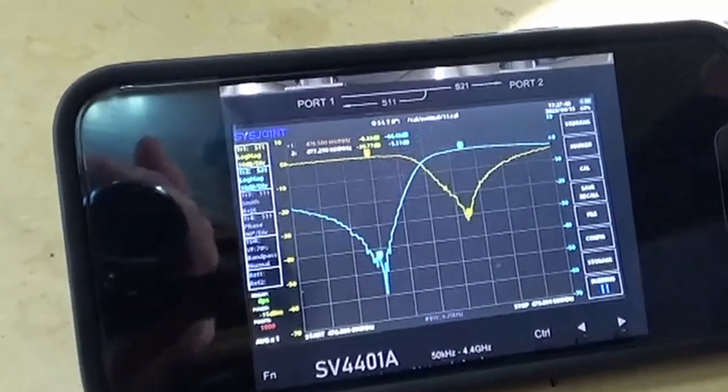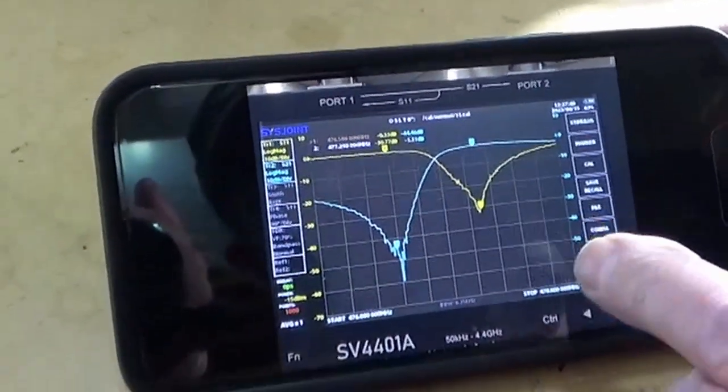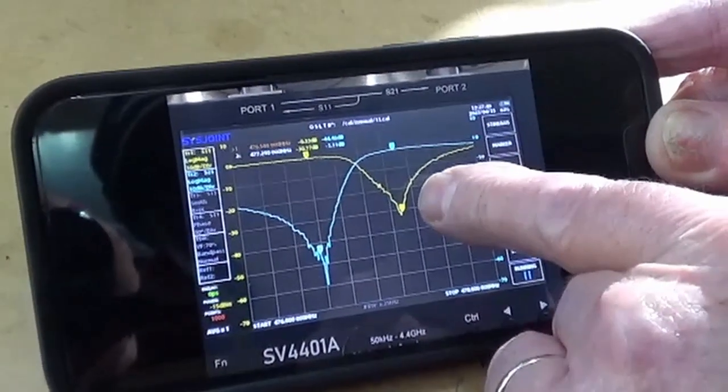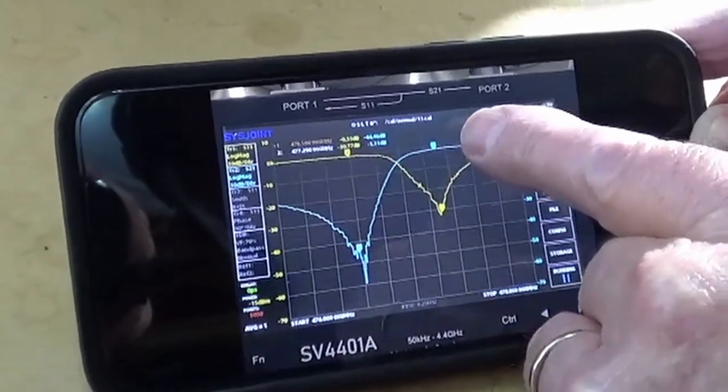This is as done on the VNA, that SV4401, so what we've got here is essentially the best match that we can possibly get at 50 ohms on our pass side of our filter.